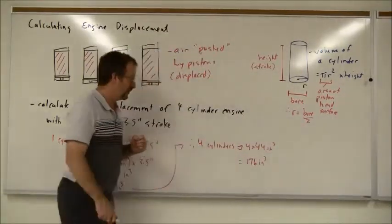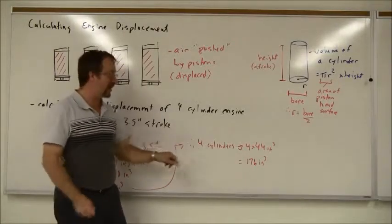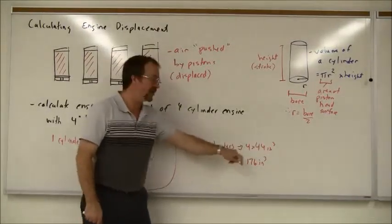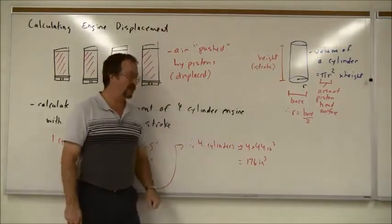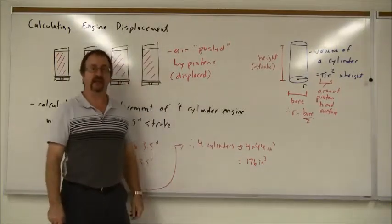So that's one cylinder. But there's four cylinders, so we take that one cylinder value, 44 cubic inches, and we can just multiply it by four for the four cylinders, gives me 176 cubic inches.